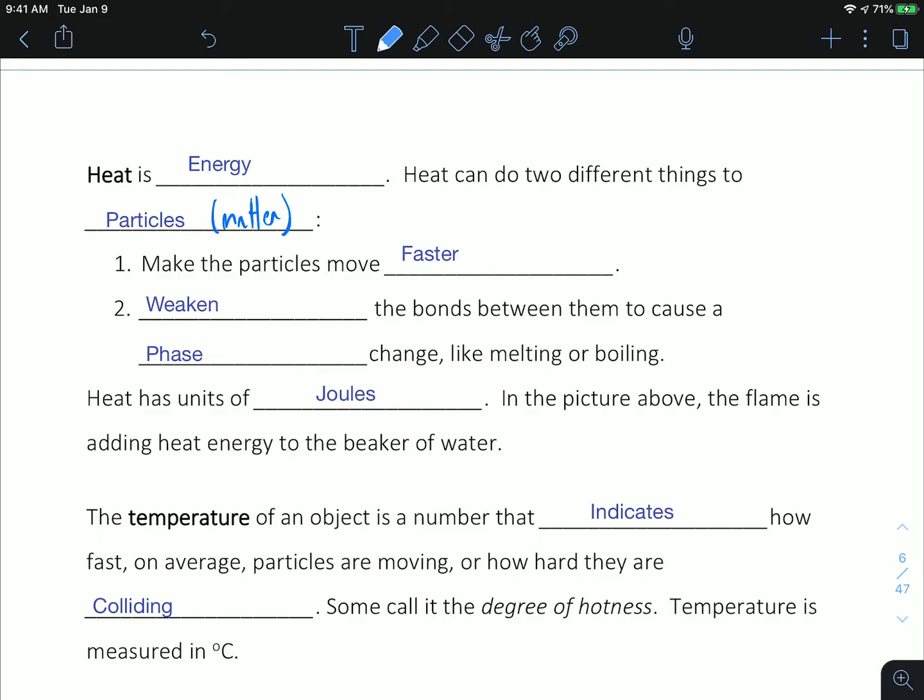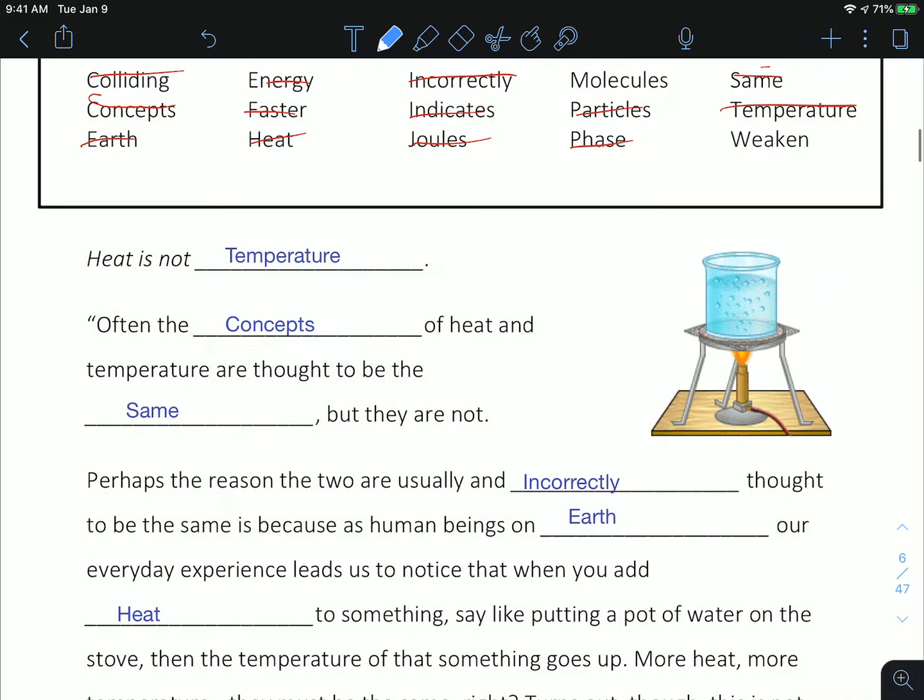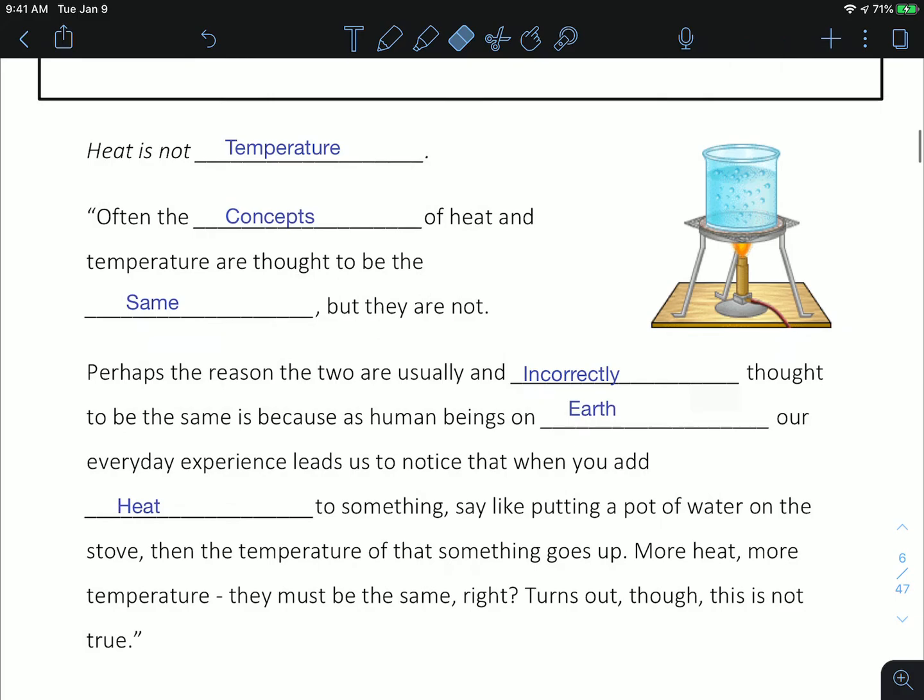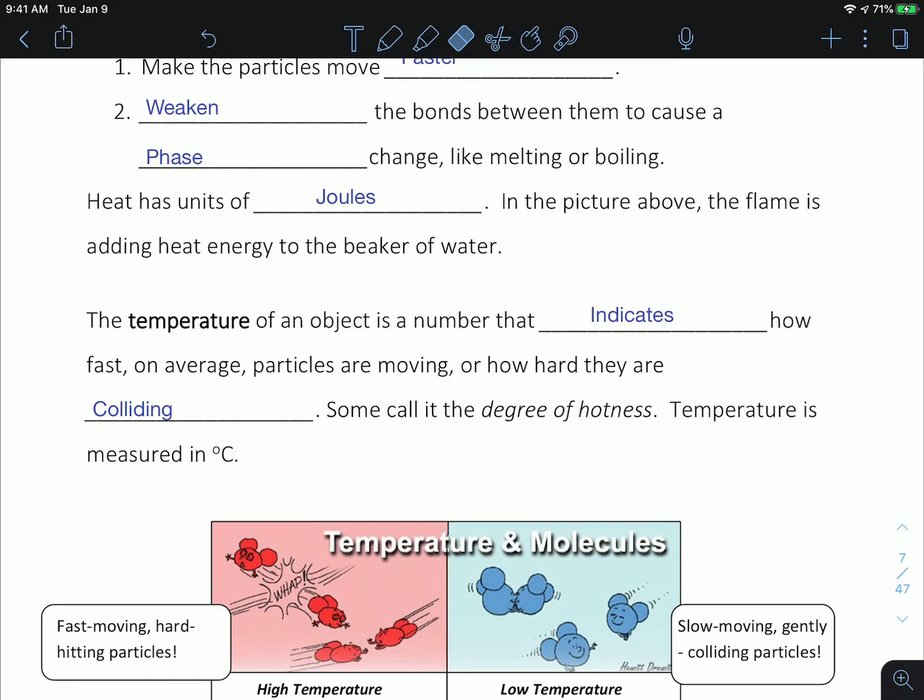We even have seen extreme examples in chemical reactions like combustion, where adding heat can weaken the bonds inside the molecules and cause those to rearrange. Heat is measured in units of joules. In the picture above, the flame is adding heat energy to the beaker of water, so this here is heat energy, and it's being added to the beaker of water.